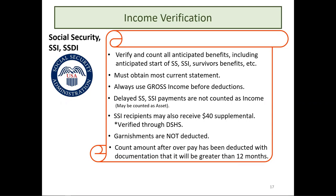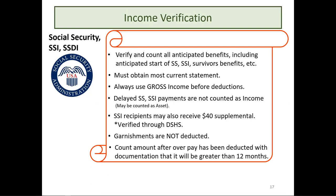For Social Security, verify and count all anticipated benefits including anticipated start of Social Security, SSI, or survivor benefits. Obtain the most current statements and always use the gross amount — if Medicaid is deducted, count the gross, not the net. Delayed Social Security or SSI payments are not counted as income but could be counted as an asset. SSI recipients may also receive $40 supplemental income, verifiable through a DSHS verification. Garnishments are not deducted — count the gross, not the net.